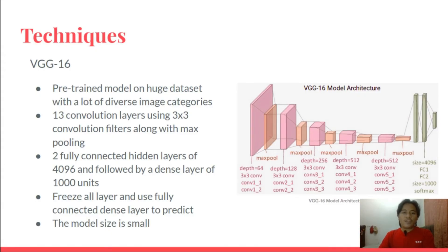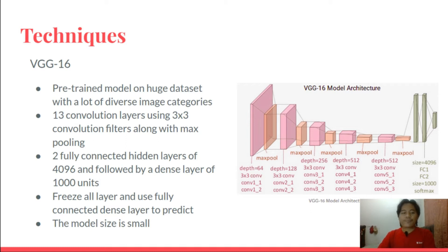For the technique, we use VGG16 instead of InceptionV3 from the baseline model, because VGG16 has a pretrained model on a huge dataset with a lot of diverse image categories. VGG16 also has fewer layers than InceptionV3, consisting of 13 convolutional layers and 2 fully connected hidden layers. So the size of the model is smaller than InceptionV3 and it can save more storage on the cloud. Also, when we train the neural network by freezing all layers in transfer learning, we got better predictions with VGG16.